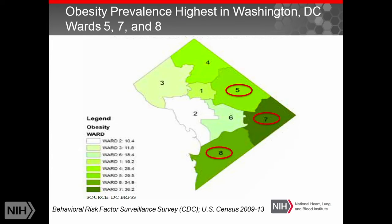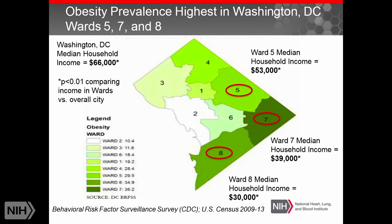As a researcher here at NIH, our group has focused on at-risk areas in Washington, D.C. We've looked at areas with the highest obesity rates — wards 5, 7, and 8 — which also have the lowest median household income as compared to the city as a whole. This helped us think about where we want to work in developing community-based interventions in Washington, D.C., targeting at-risk populations, particularly in the African American community.